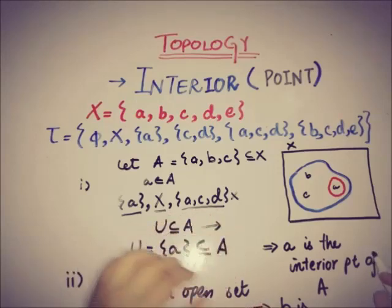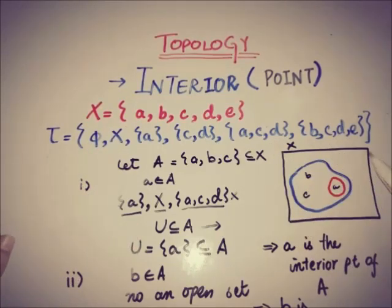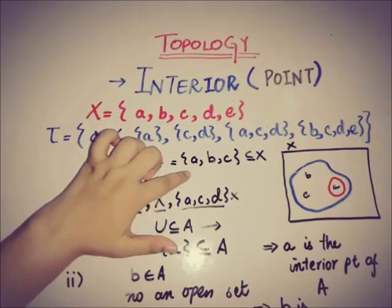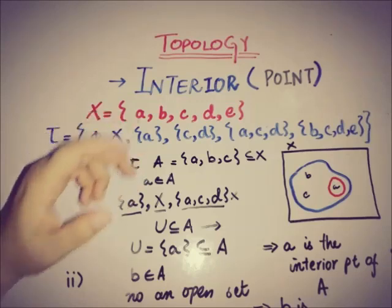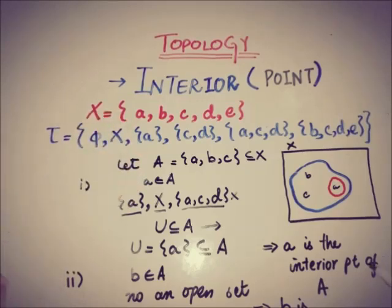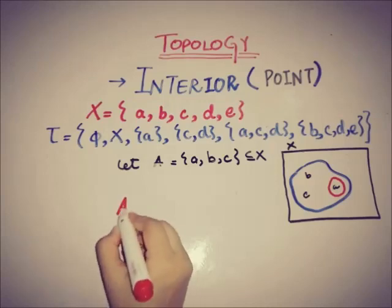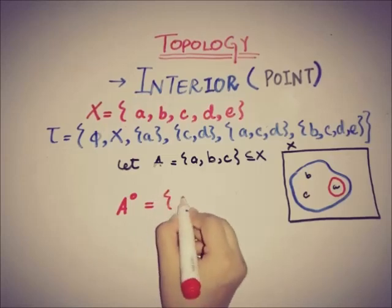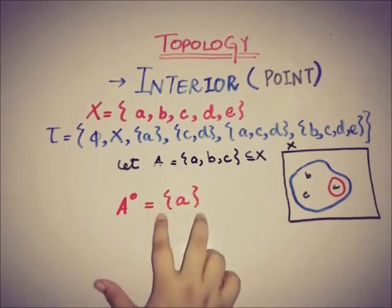Now we will check for the point c. The open neighborhoods of c are X, {c,d}, {a,c,d}, and {b,c,d}. {c,d} is not a subset of A, {a,c,d} is also not a subset of A, and {b,c,d} is also not a subset of A. This means c is also not an interior point of the set A. So for the set {a,b,c} we have only one interior point, which is a. By the definition, the interior of A — denoted Ȧ — is only equal to the set {a}, because a is the only interior point.